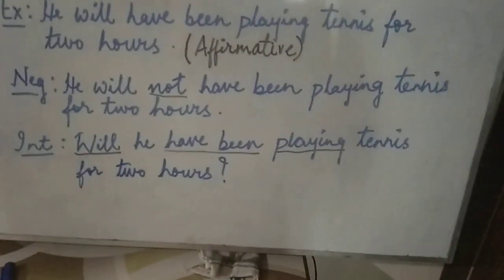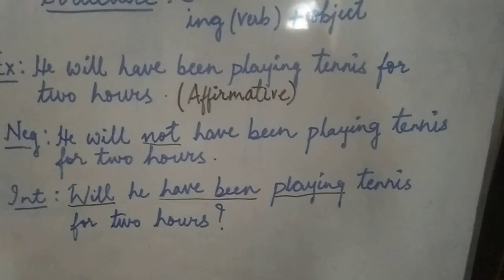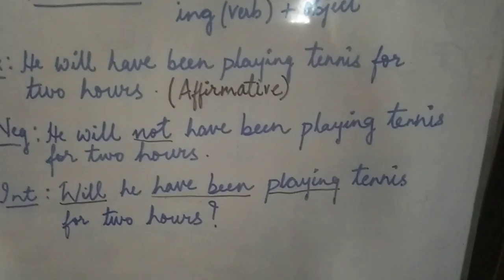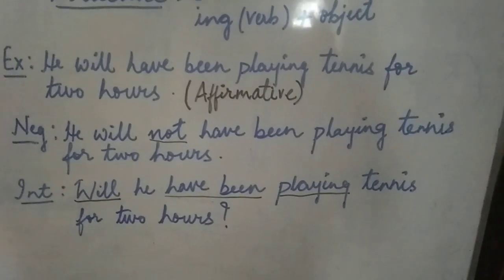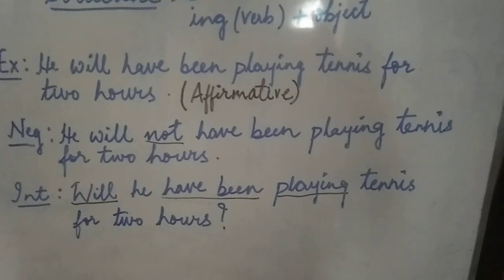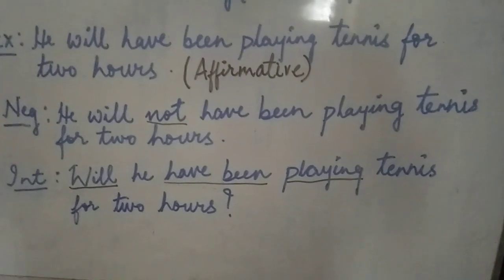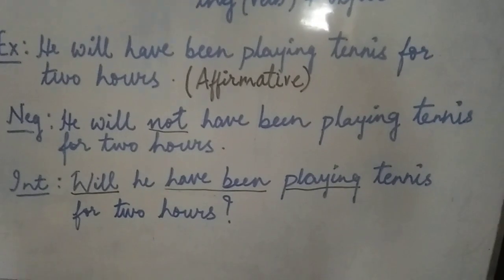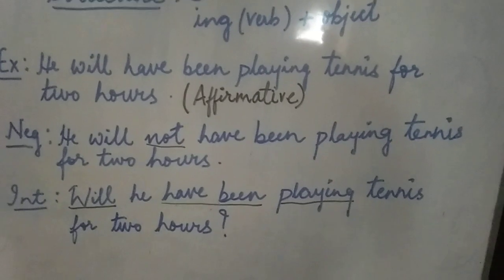Now let's come to the interrogative sentence. First the auxiliary verb 'will' comes, then the subject, then 'have been' with the ing form of the main verb, then the object. So the sentence will be: Will he have been playing tennis for two hours? Place a question mark — punctuation in English is very important. Without punctuation your sentence is incomplete.